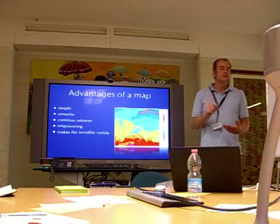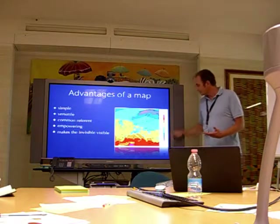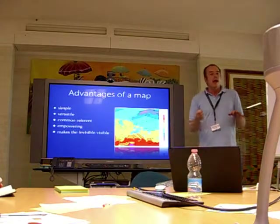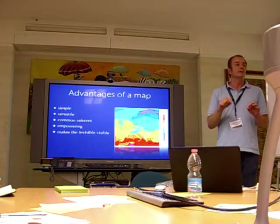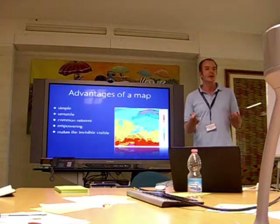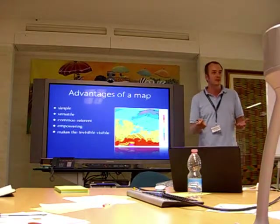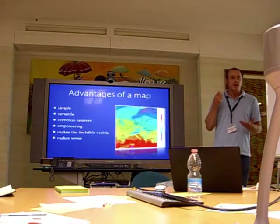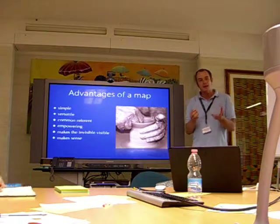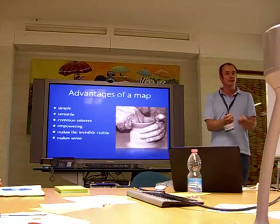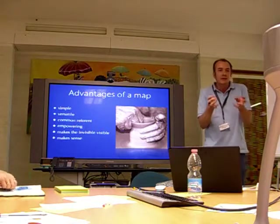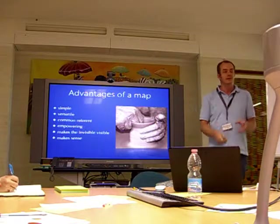A map makes the invisible visible. Here you have temperature — you cannot see temperature unless you have such a map. Exactly the same happens with relationships. Relationships do not have a physical counterpart. They have no matter, but they do matter, don't they? And having a map, I can make sense. When I say 'make,' I really mean craft, fabricate sense — like a craftsman. It really allows you to pull up and make sense.